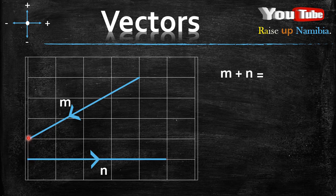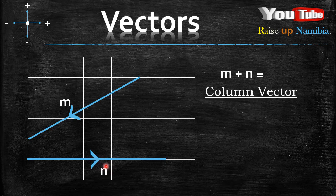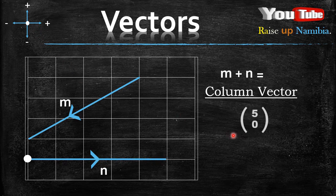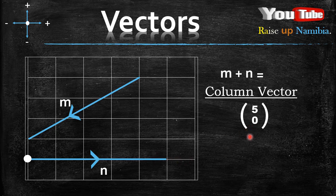Now, if you don't know how to identify the head and the tail of a vector, check out the link down below in the description. I suggest for you to write N as a column vector. So, if you write N as a column vector, we'll be starting here. You'll be moving to the right: one, two, three, four, five. And since you are moving to the right, it will give you a positive five. And then on the y-axis, you will not move, so it will be zero. If you don't know how to write a vector as a column vector, check out the second link down below in the description.